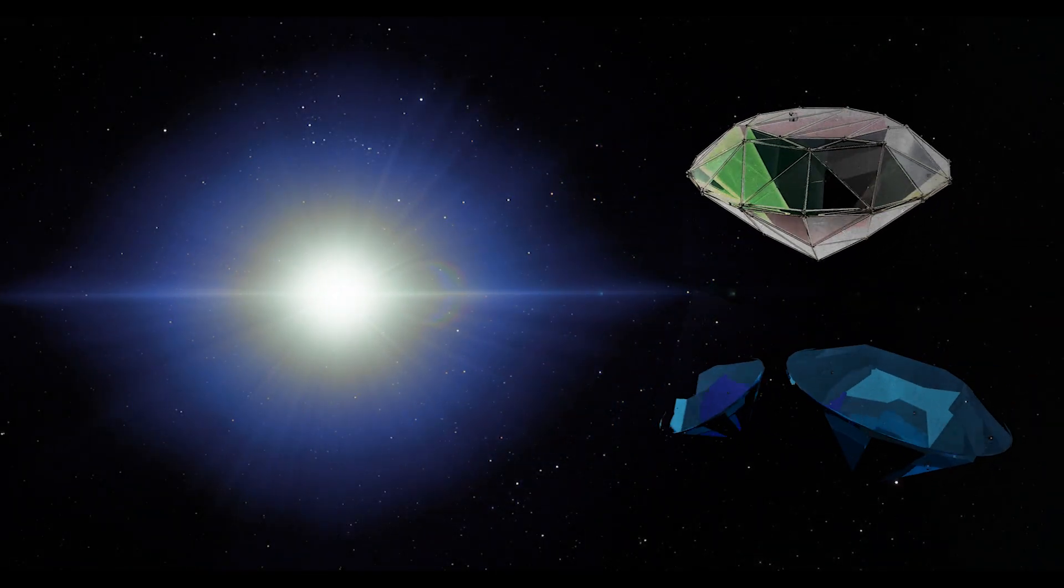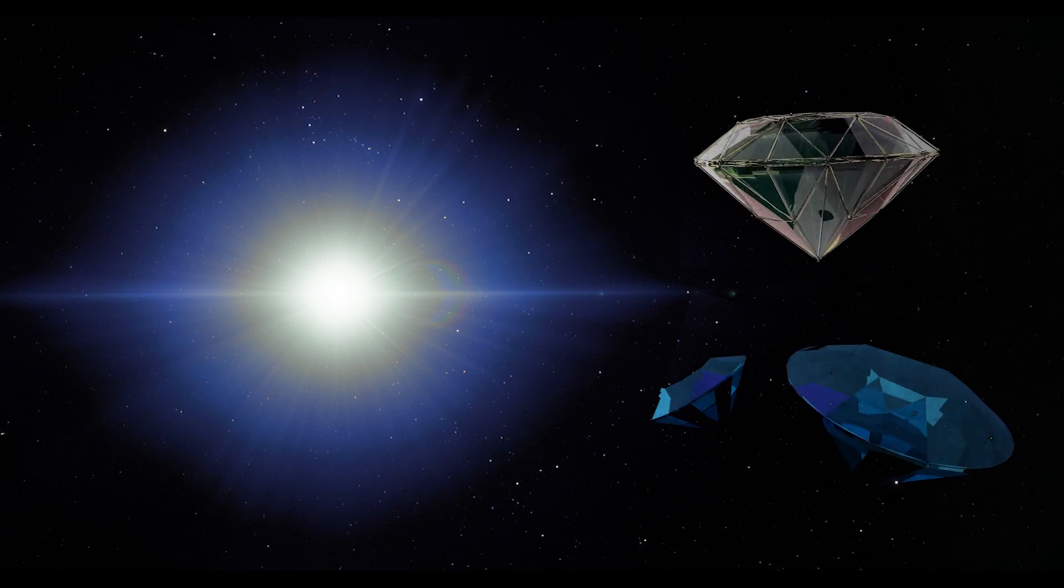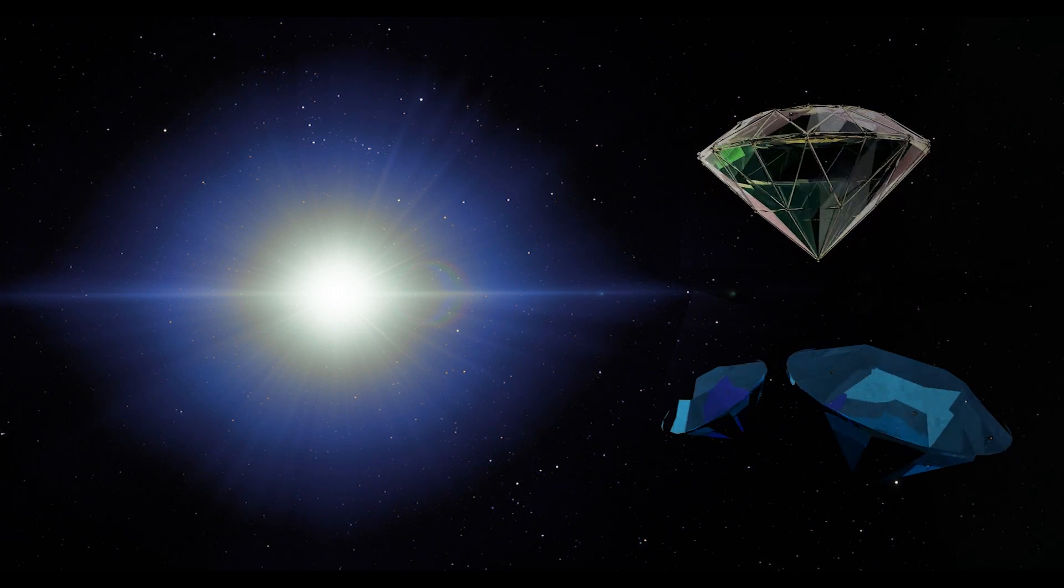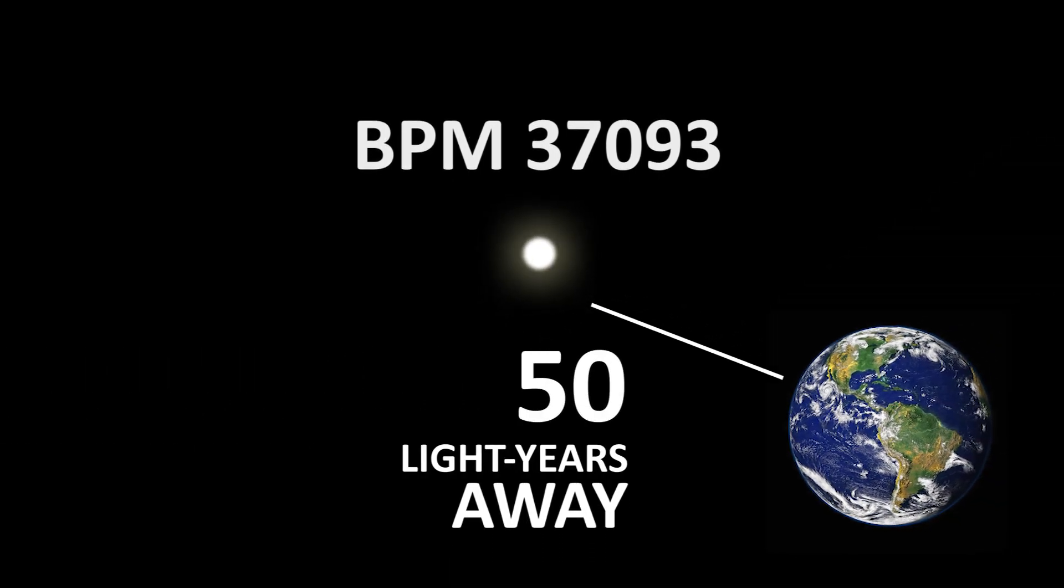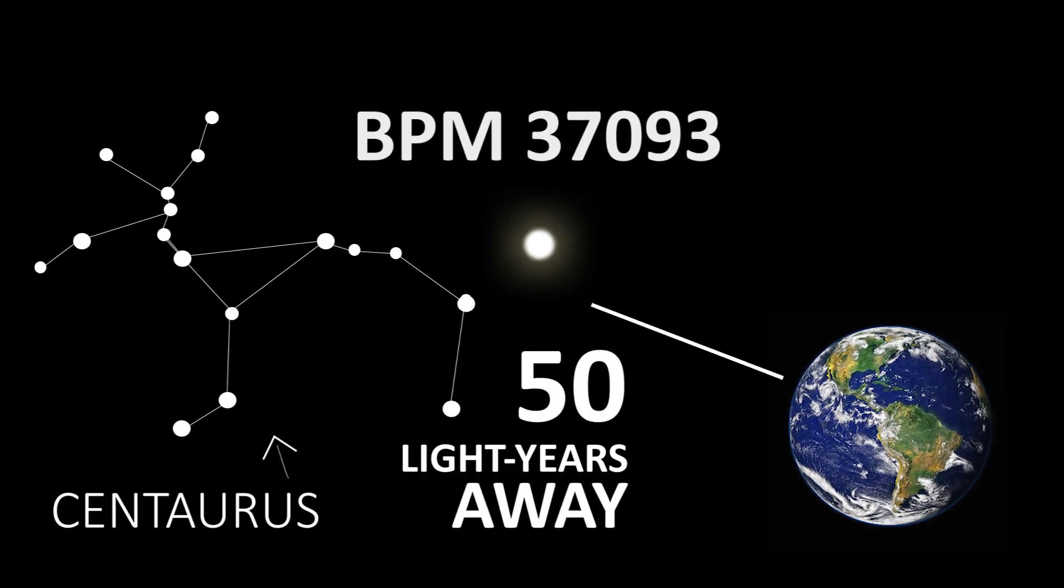Somewhere deep in space is a diamond star of 10 billion trillion trillion carats. It's the burned-out corpse of a star named BPM 37093, only about 50 light-years away from Earth in the constellation Centaurus.